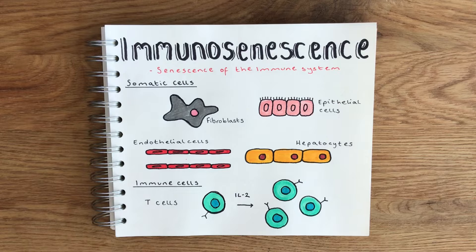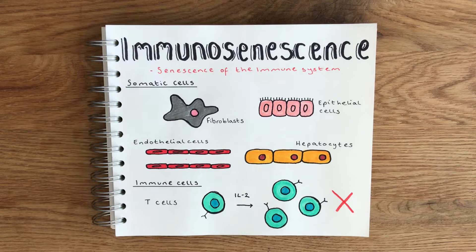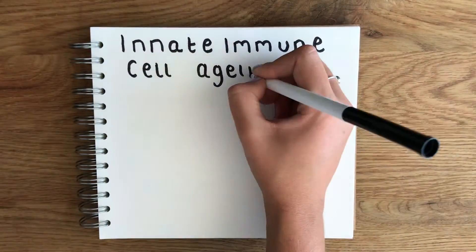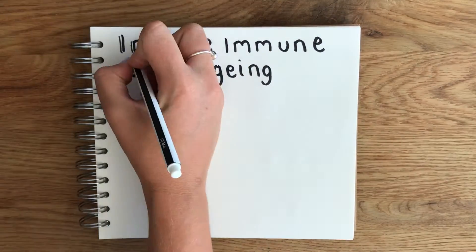However, later studies that actually analyzed these cell populations properly found that these T cells had karyotype abnormalities — meaning that basically their chromosomes had been altered. This was just an artifact of the culturing, and it's now firmly established that similar to other cell types, T cells and other immune cells can also undergo replicative senescence. However, senescence doesn't affect all of the immune system in the same way.